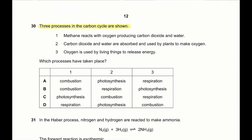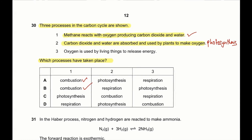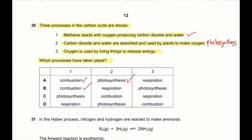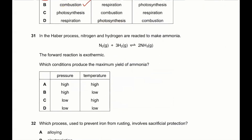Question 30: three processes in the carbon cycle are shown. Methane reacts with oxygen producing carbon dioxide and water — that is combustion. Carbon dioxide and water are absorbed and used by plants to make oxygen — that is photosynthesis. Oxygen is used by living things to release energy — that is respiration. So combustion, photosynthesis, respiration — 30 A is the correct answer.